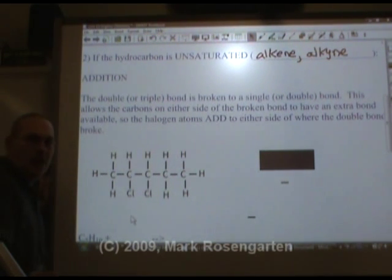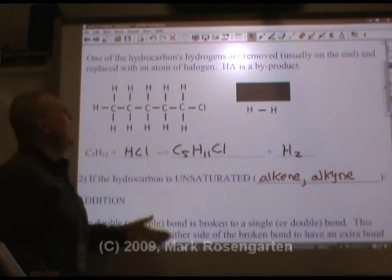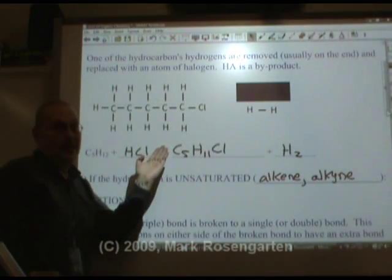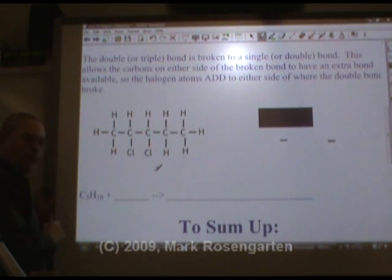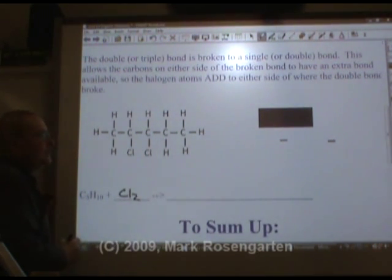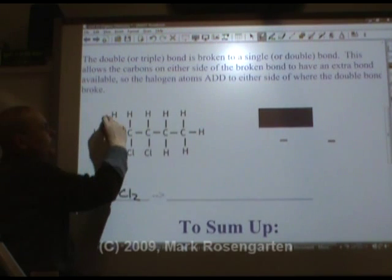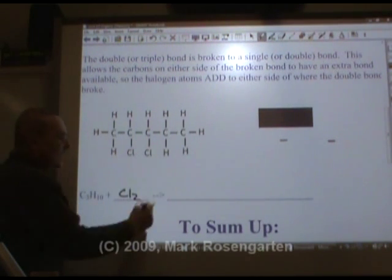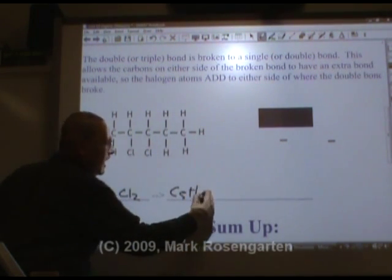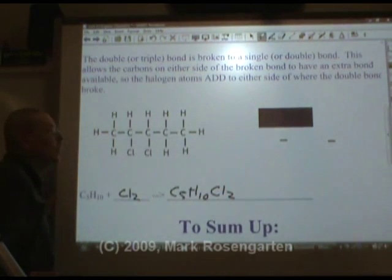So if you want to make a molecule that has chlorines next to each other, addition is the way to go. If you want to put chlorine on the end of the molecule, substitution is the way to go. We started off with C5H10, added Cl2, the double bond broke, and we didn't remove any hydrogens — we just replaced a double bond. So the number of hydrogens remains intact. C5H10 becomes C5H10 with two chlorines added to the molecule. That's why it's called addition.